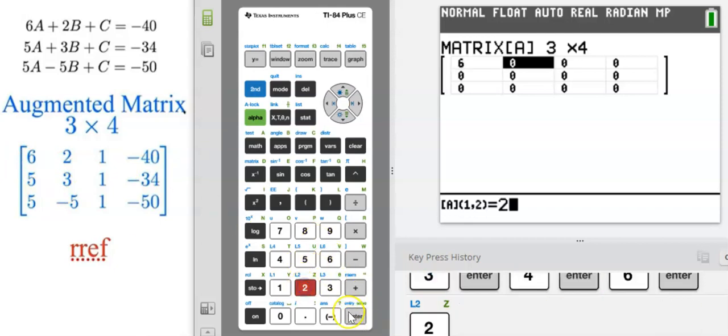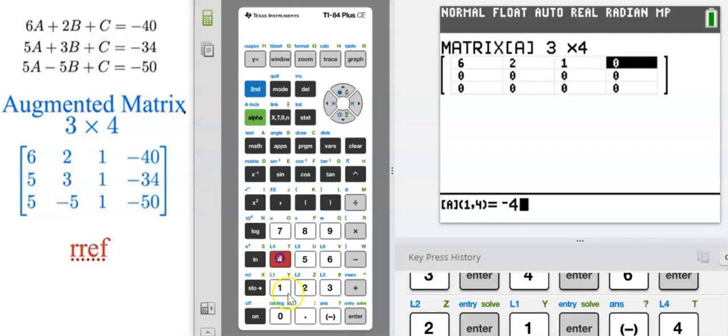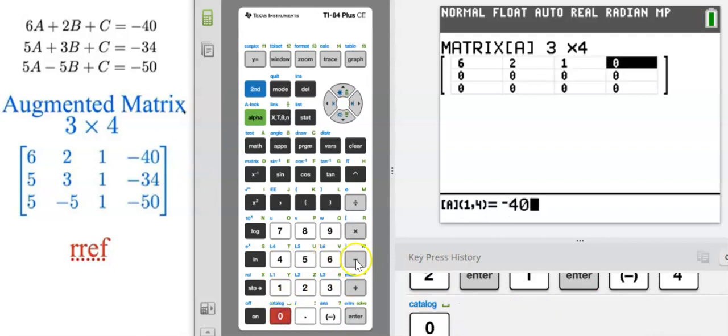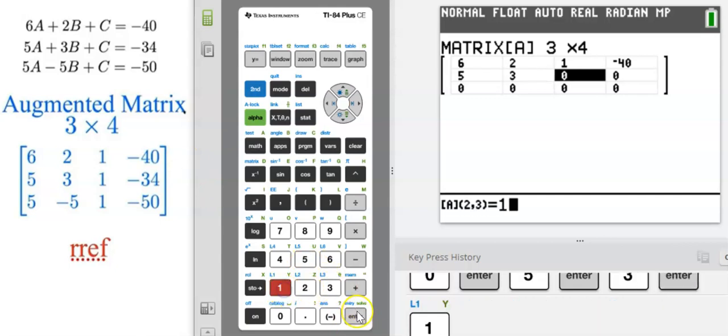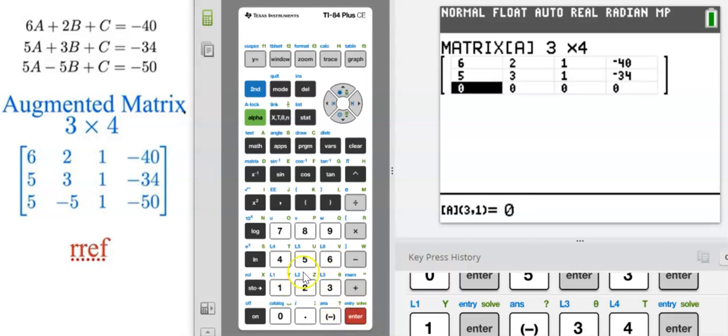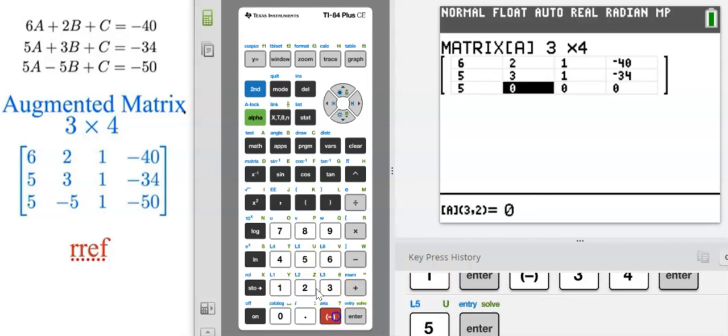Six, enter, two, enter, one, enter, negative 40. Please make sure you're not doing minus 40. Then five, three, one, negative 34, and five, negative five, one, and negative 50.